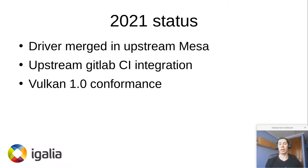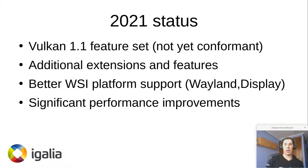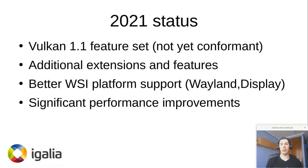We also obtained Vulkan 1.0 conformance, which I believe happened either before the end of last year or very shortly after. Since then, we have been working on Vulkan 1.1. We currently have a minimal Vulkan 1.1 implementation, which is not yet conformant. We are working on finishing the last test failures — we have a few flaky tests — but I think we are not very far from being ready to claim conformance.